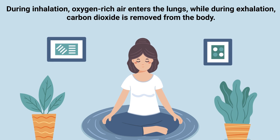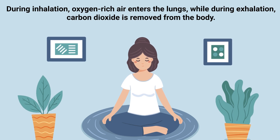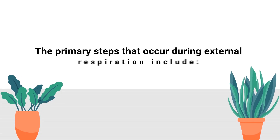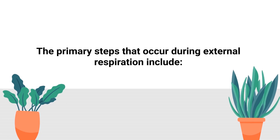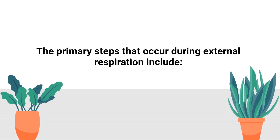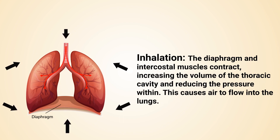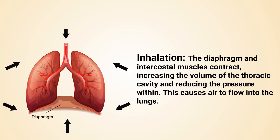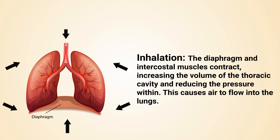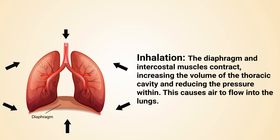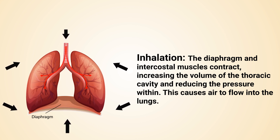The primary steps that occur during external respiration include inhalation: the diaphragm and intercostal muscles contract, increasing the volume of the thoracic cavity and reducing the pressure within.